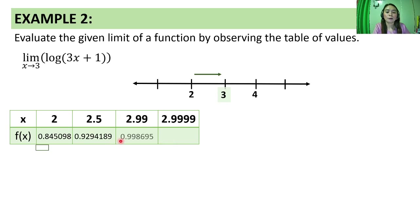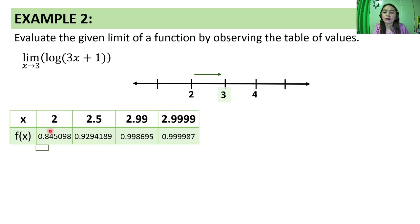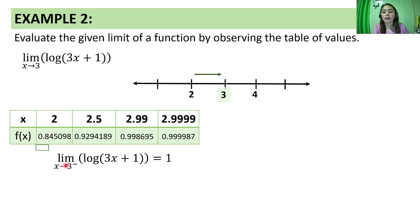Here are all the computed function values for the left-side approach. Habang lumalapit yung x values natin sa 3 from the left, the function values approach 1. Therefore, the limit of the logarithm of 3x plus 1 as x approaches 3 from the left is equal to 1.